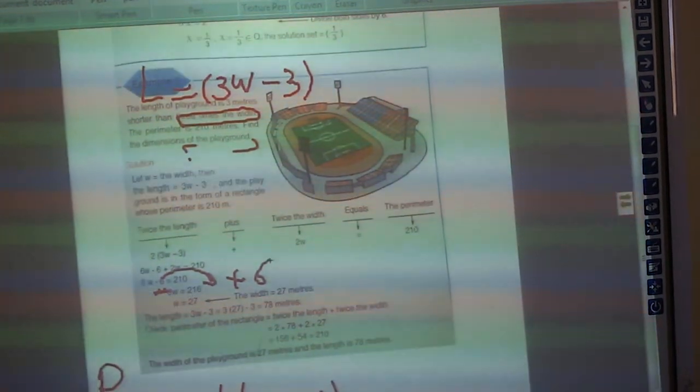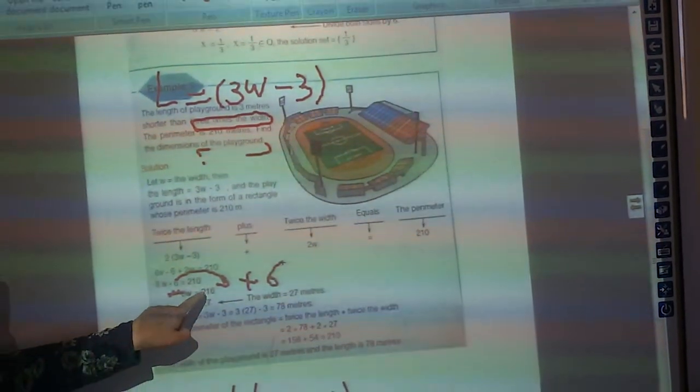210 plus 6 will give you 216. So 8W equals 216.